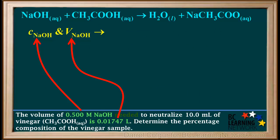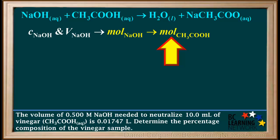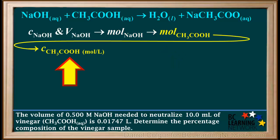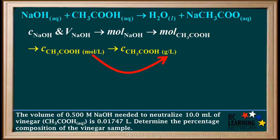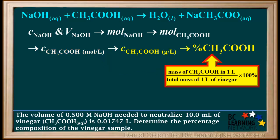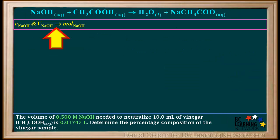Now we can create a plan for our calculations. We start by using the concentration and volume of NaOH to find the moles of NaOH. Next, we use the coefficients in the balanced equation to find the moles of CH3COOH in the sample. The next step is to find the molar concentration of CH3COOH in moles per liter. After that, we'll convert from moles of CH3COOH per liter to grams of CH3COOH per liter. In the final step, we'll consider one liter of vinegar: the percentage composition is the mass of pure acetic acid in one liter divided by the total mass of one liter of vinegar, times 100%.